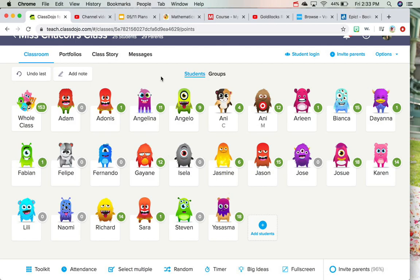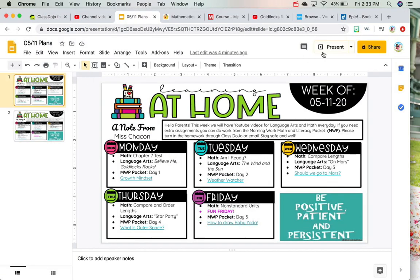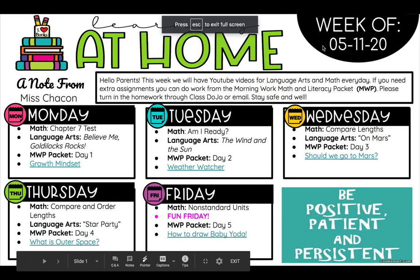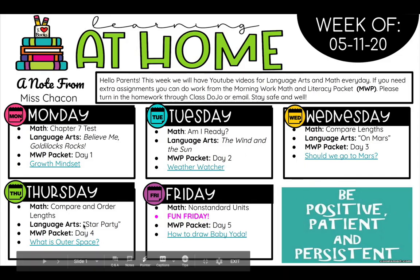If you ever want to look at our plans for the week, you can go to Class Dojo. We have it posted on our class story and it'll take you to something that looks like this. It has our plans for the week. Today is our math test and we're going to be reading a book called Believe Me, Goldilocks Rocks. So that's going to be fun and we have a lot of fun stuff for today and this whole week.